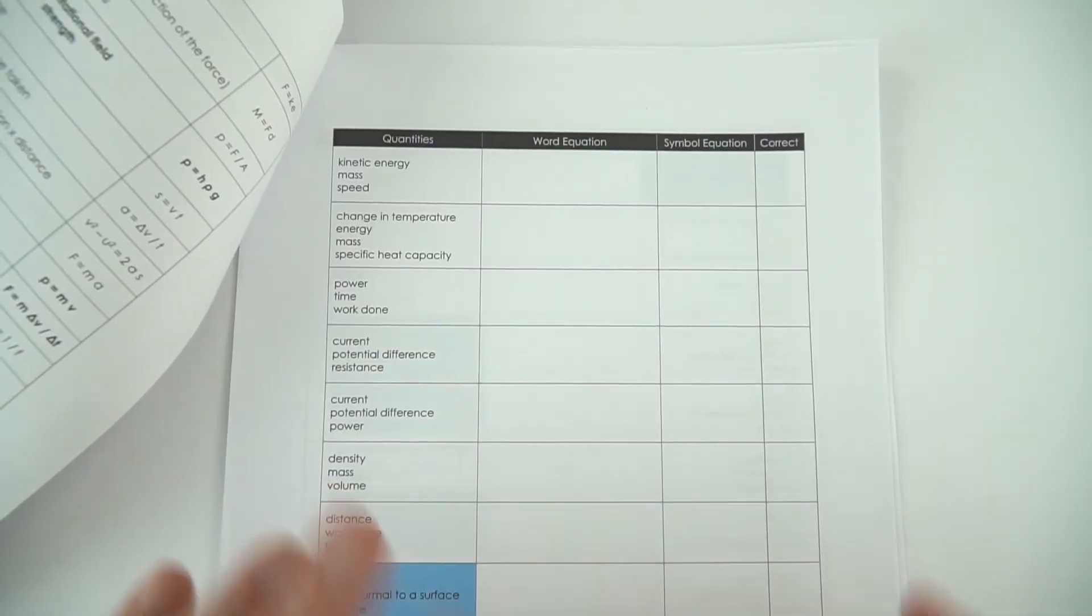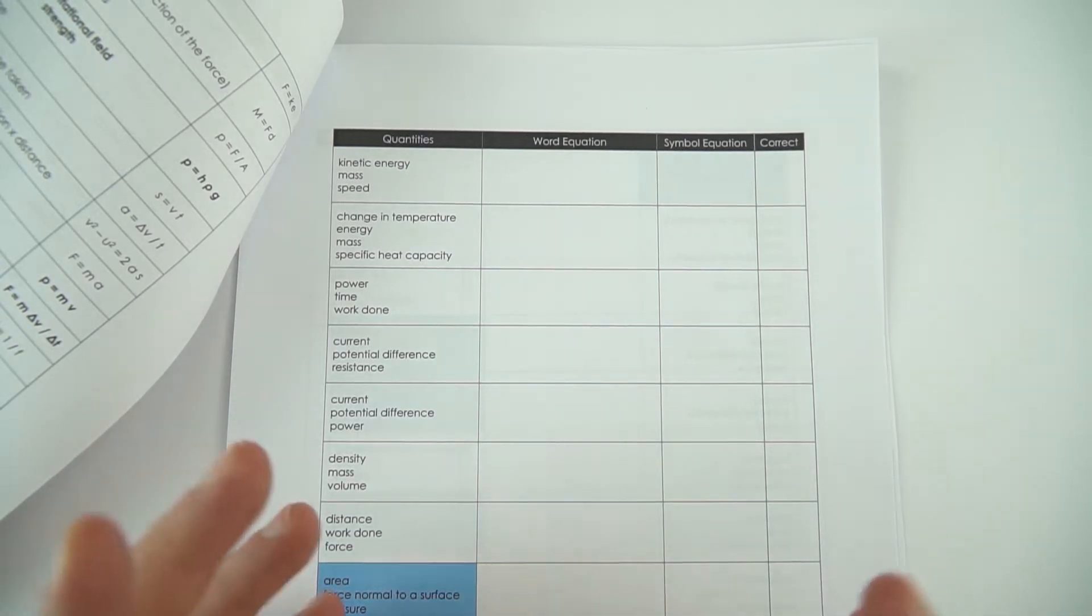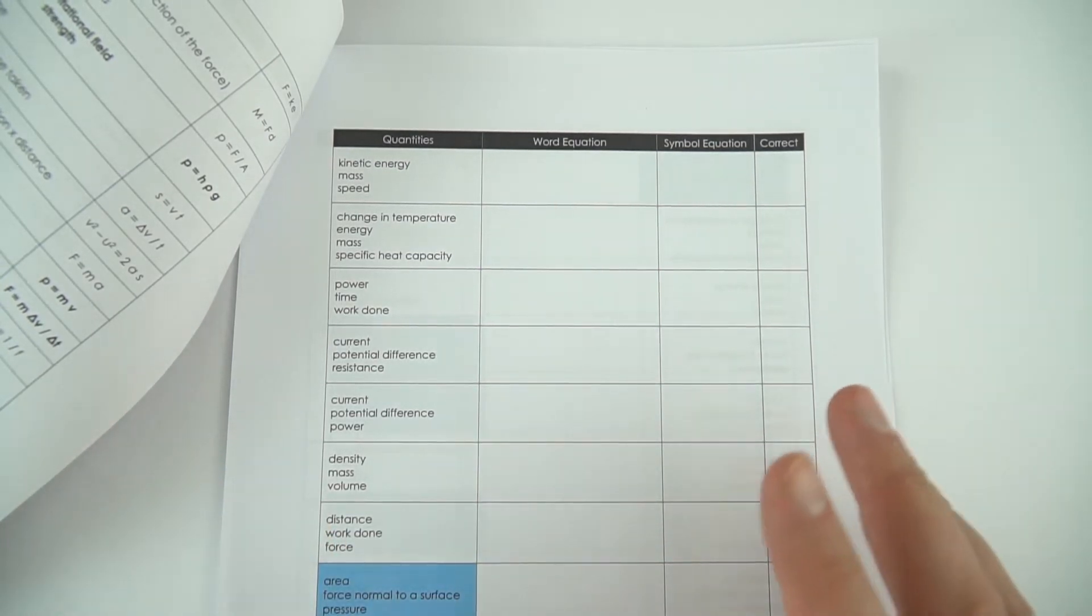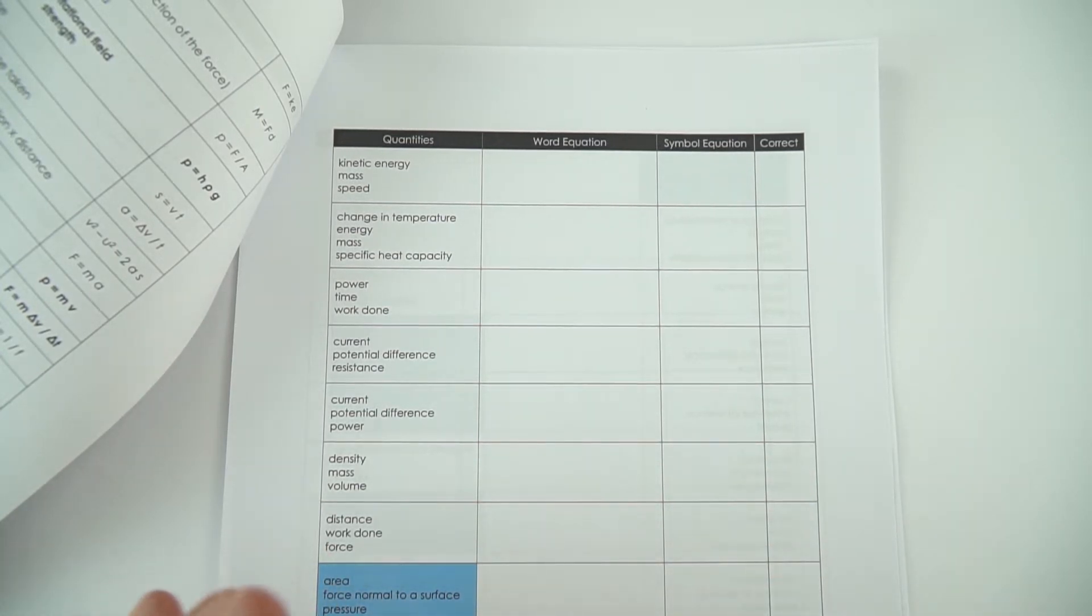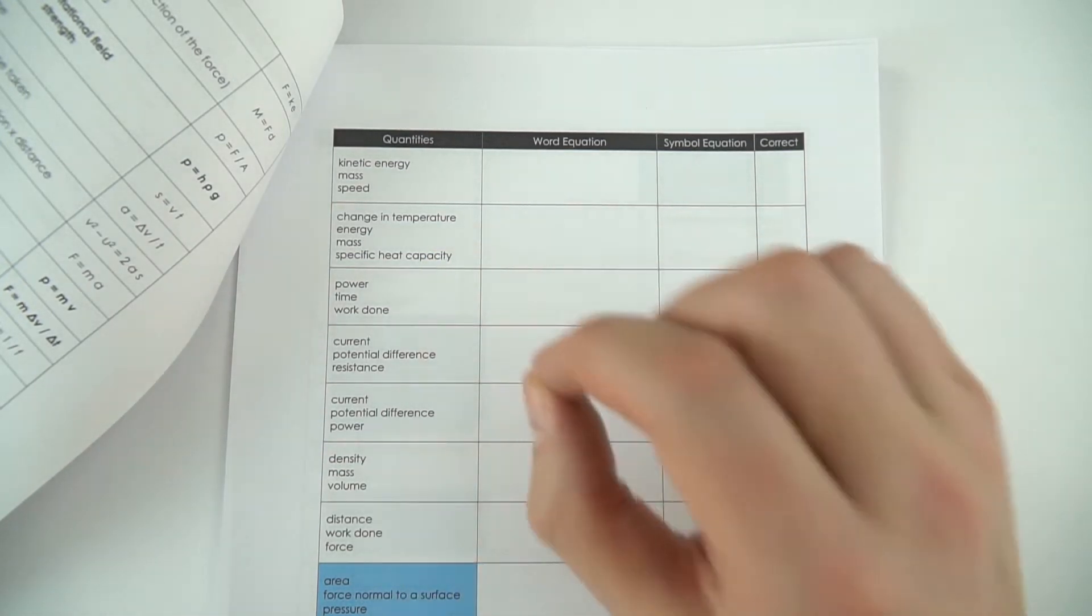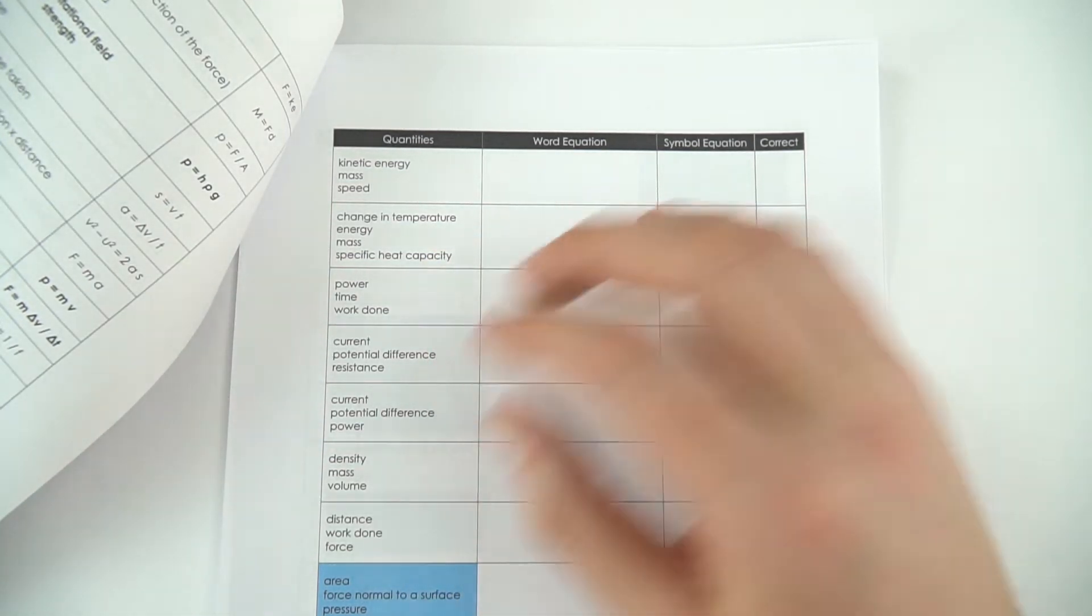I've created this to help you memorize all these equations. You can do this at any point - you don't have to wait to be taught by your teacher. You can start in year 9 or year 10, even if you don't know the physics. You can spend a little time and just know the equations, so when it comes to the lesson you already know what the quantities are and how they can be used.